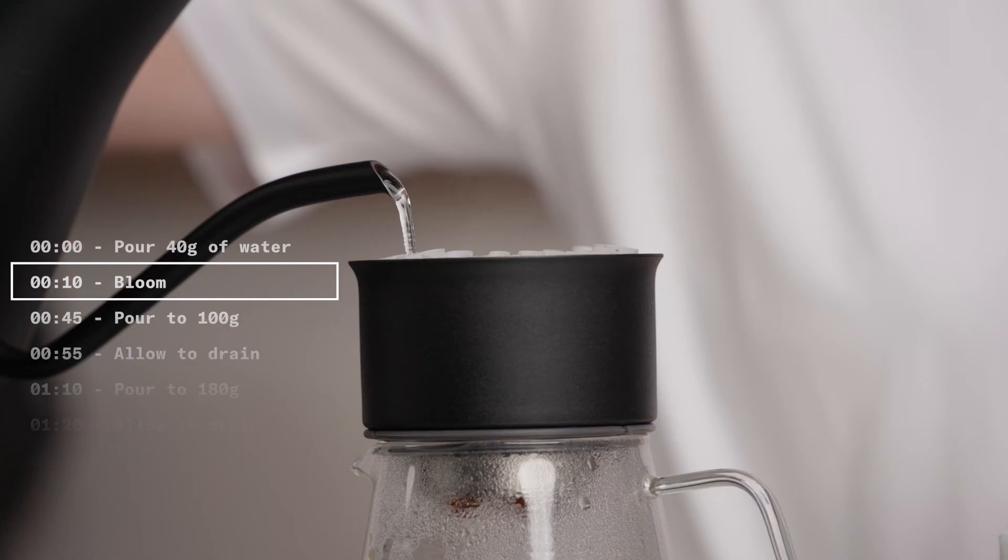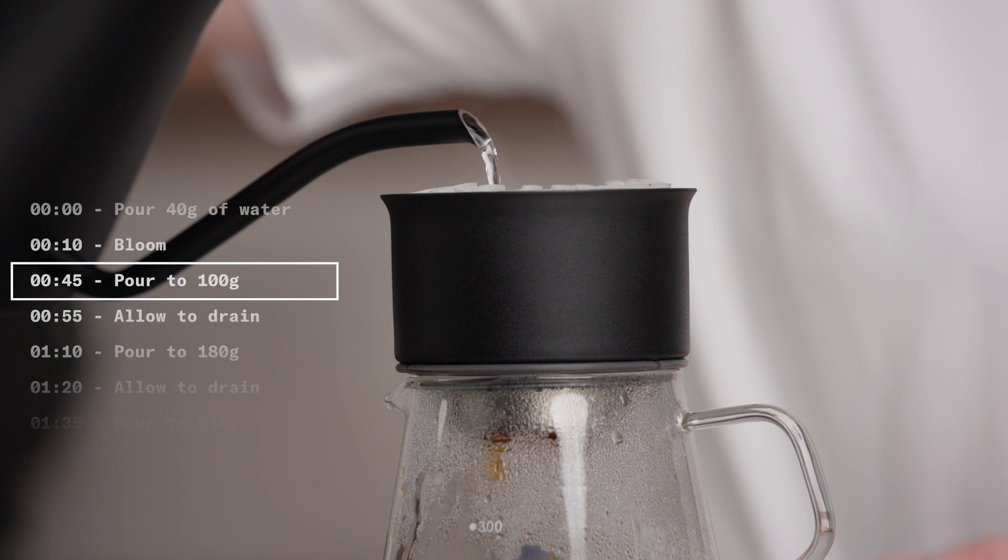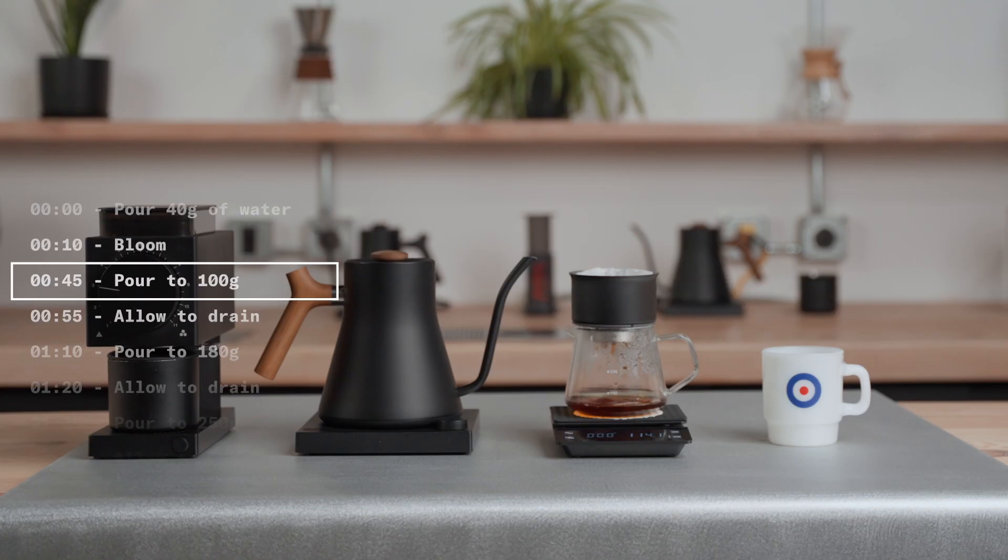We are going to pour using concentric circles and we will be pausing in between pours. Perform the first pour by adding 60 grams of water to reach 100 grams. Let it drain for 15 to 20 seconds.